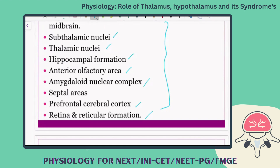According to the signals received, the hypothalamus will control the body by releasing or inhibiting specific endocrine hormones, or through sympathetic and parasympathetic signals.